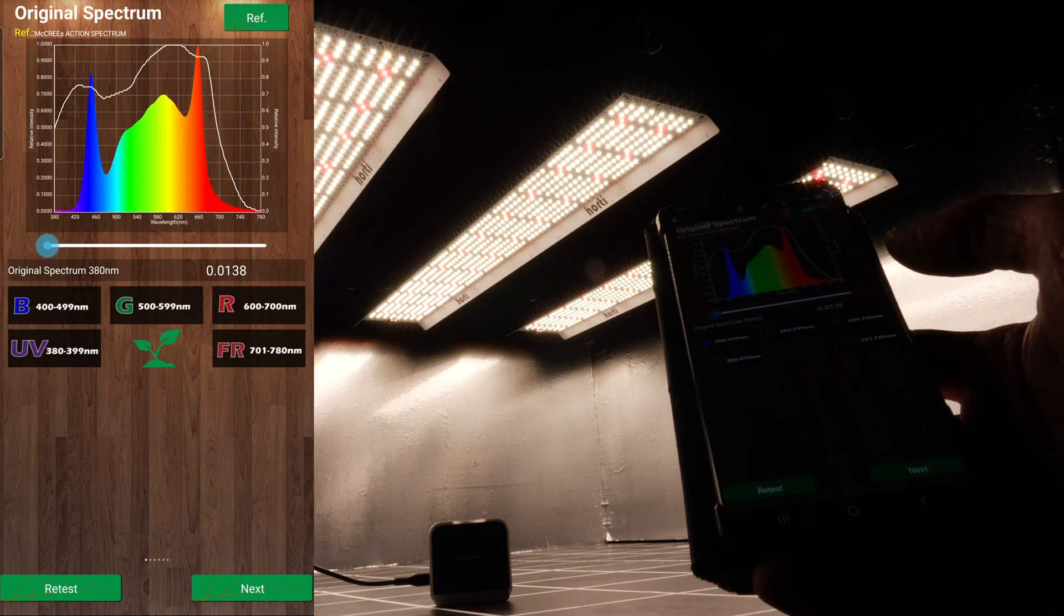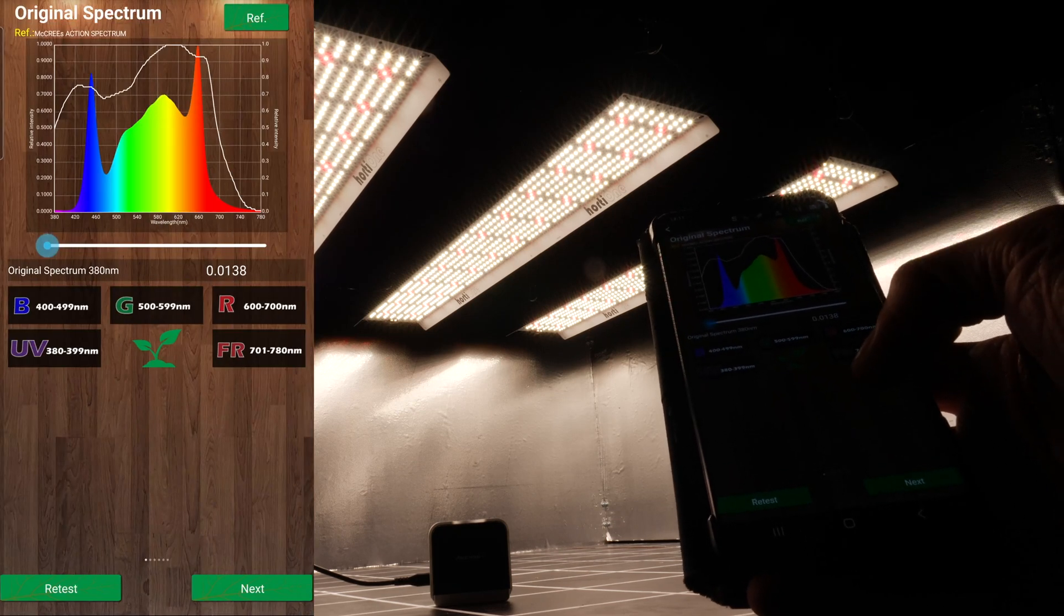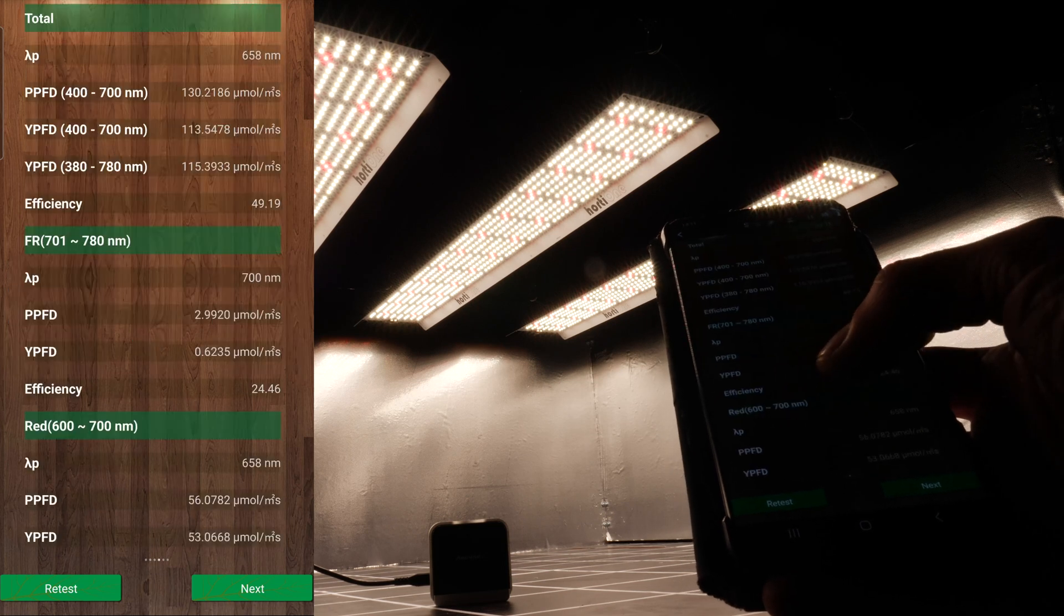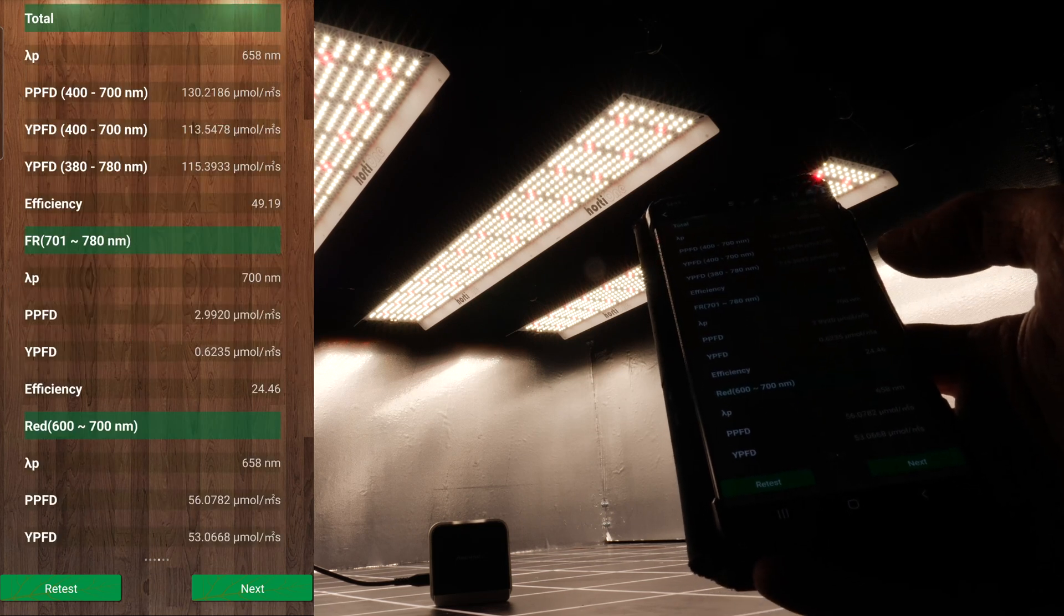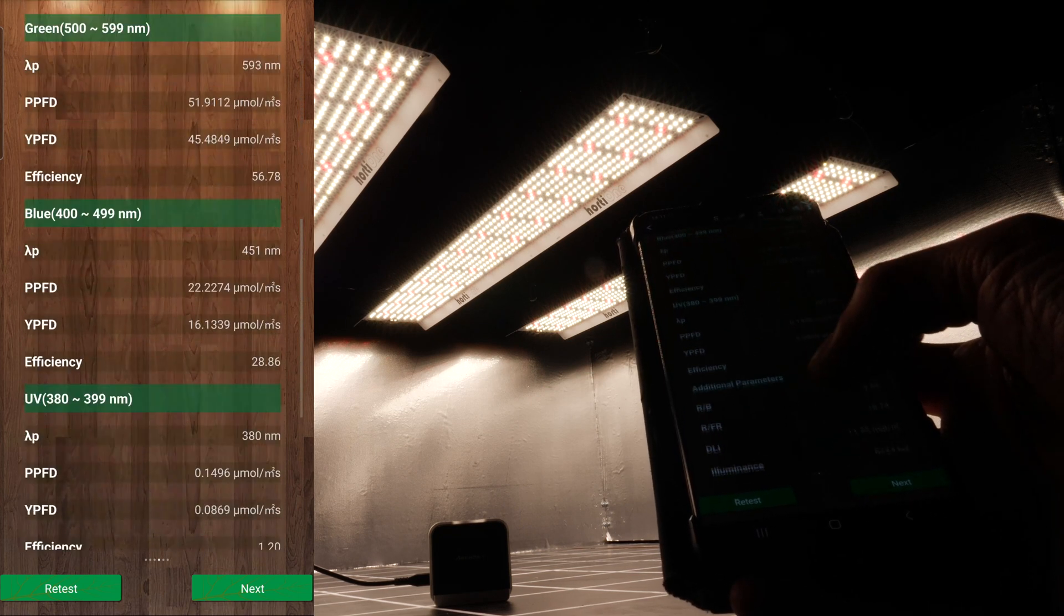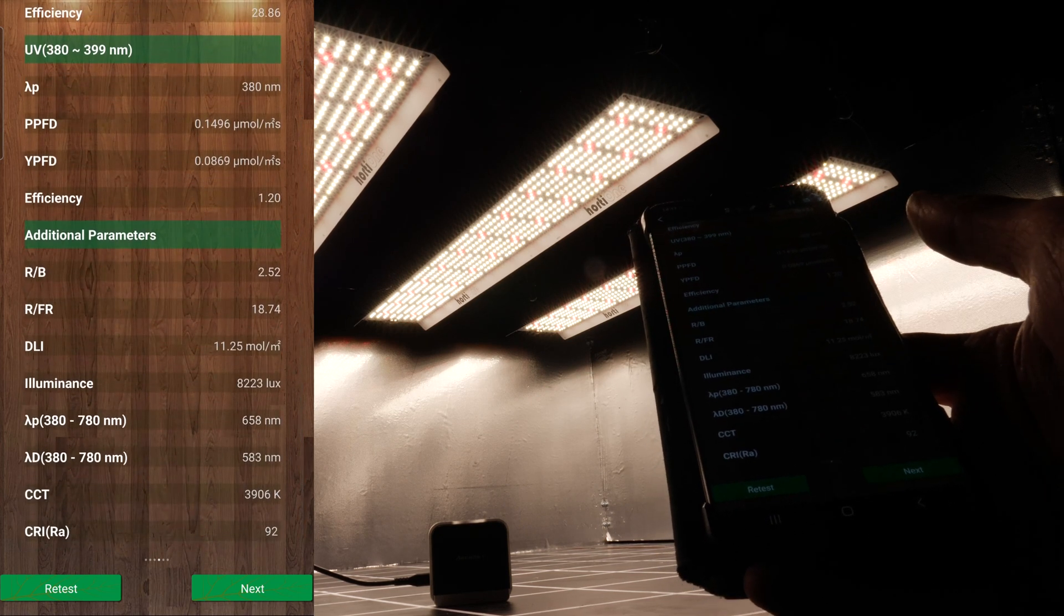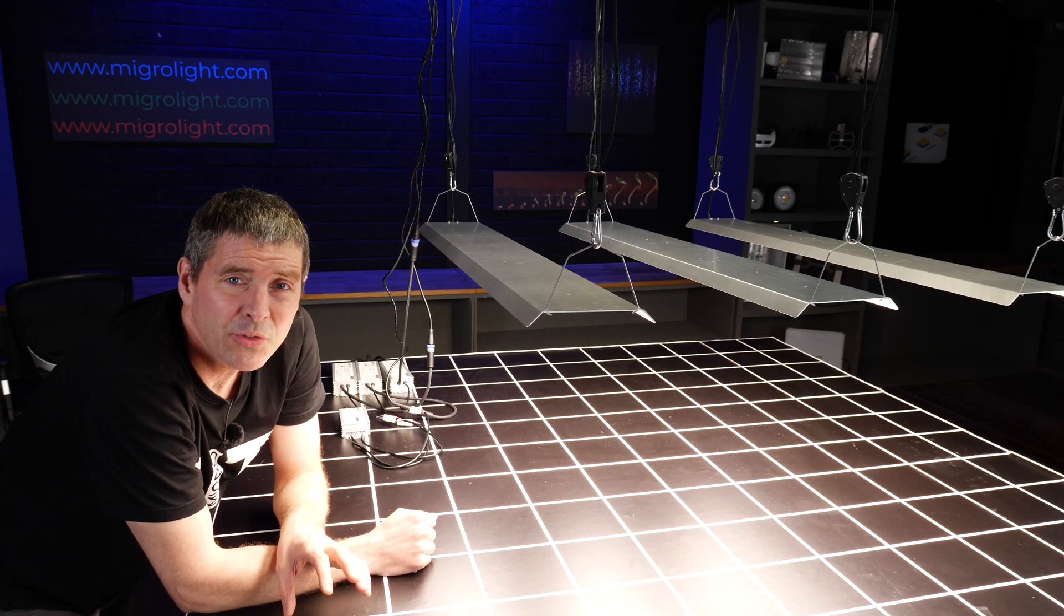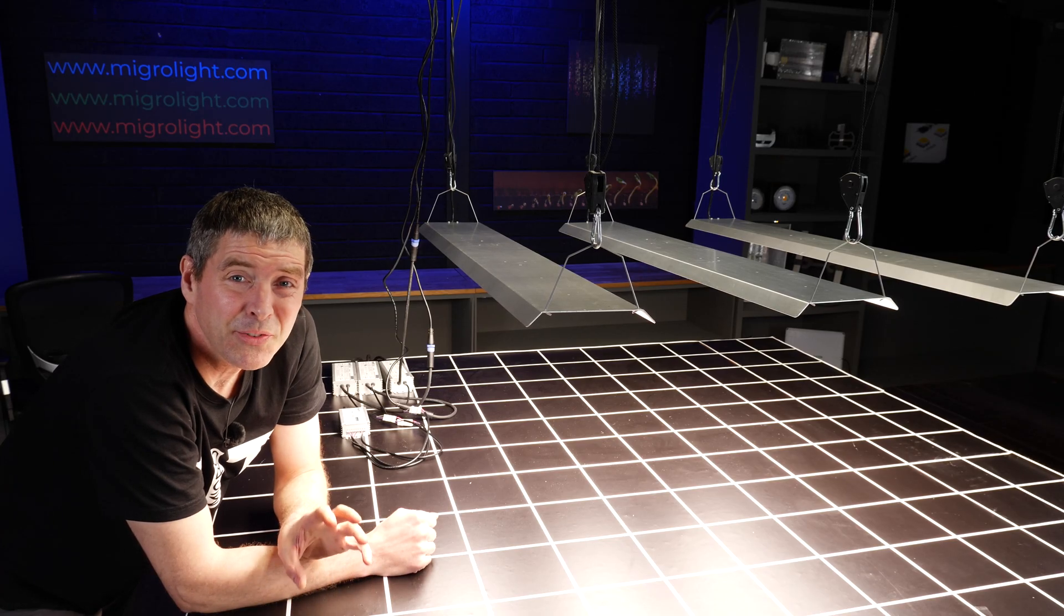The overall color temperature, as you can see here when I did the spectrum test with the Asensetek Passport, is 3800 color temperature, which is right there in the middle and suitable for growing plants all the way from seed to harvest.